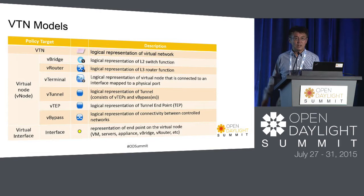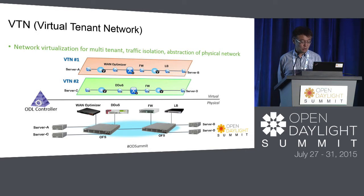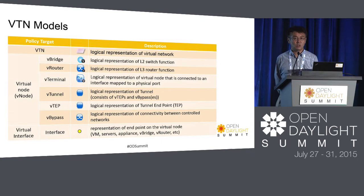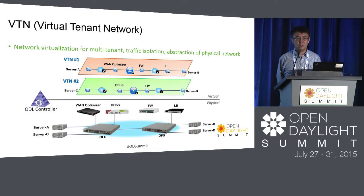By combining all these components, you can define your own logical networks. You can see in VTN number 1 there are network appliances or services, layer 3 virtual routers in the middle, and also VBridge in VTN1 and VTN2. This is completely up to you what kind of virtual network you want to create. VTN provides flexibility to define logical networks, completely hides the complexity of physical topologies, and the two tenants are completely isolated from each other.